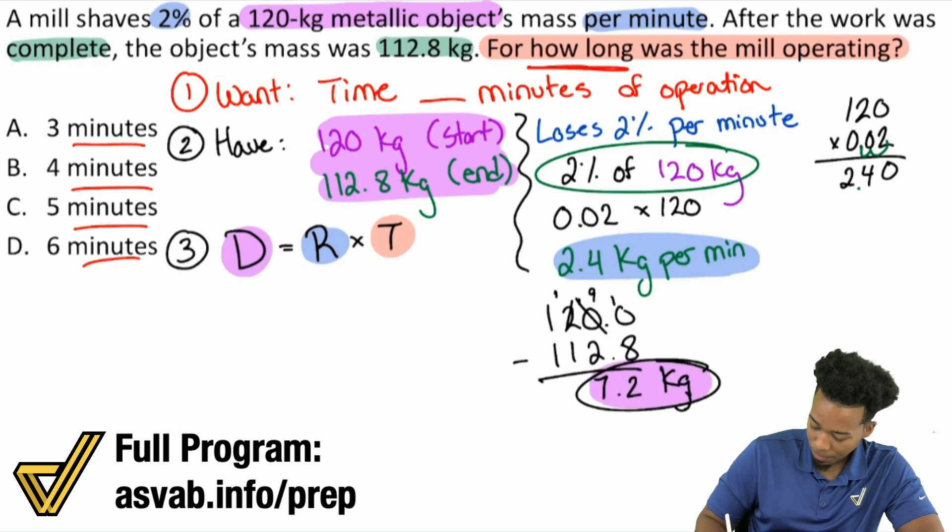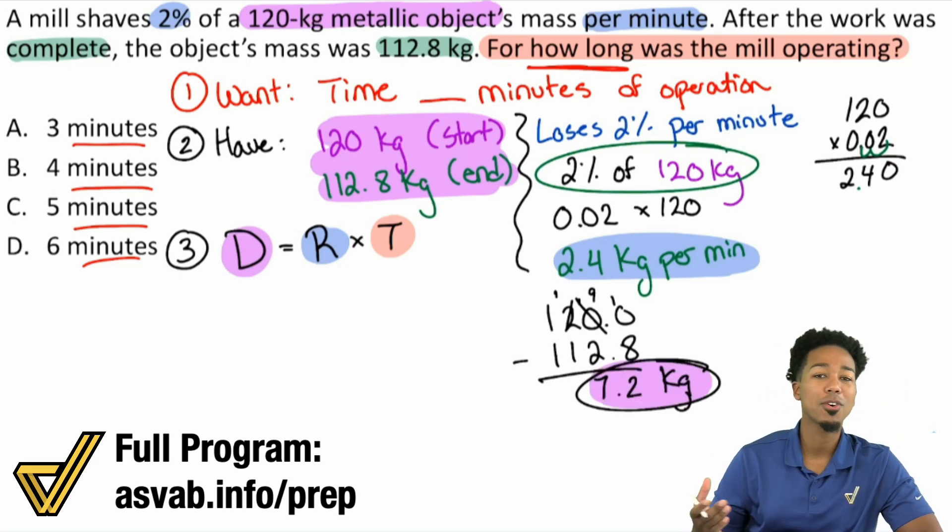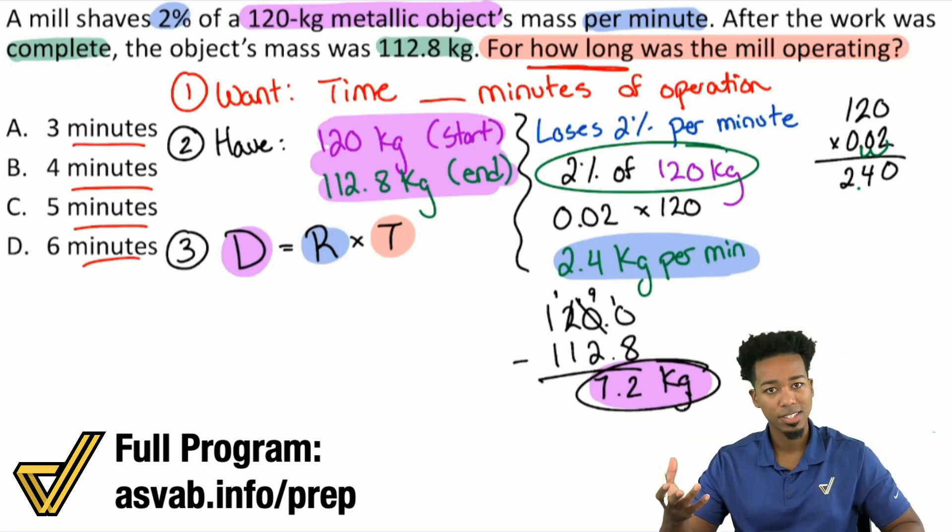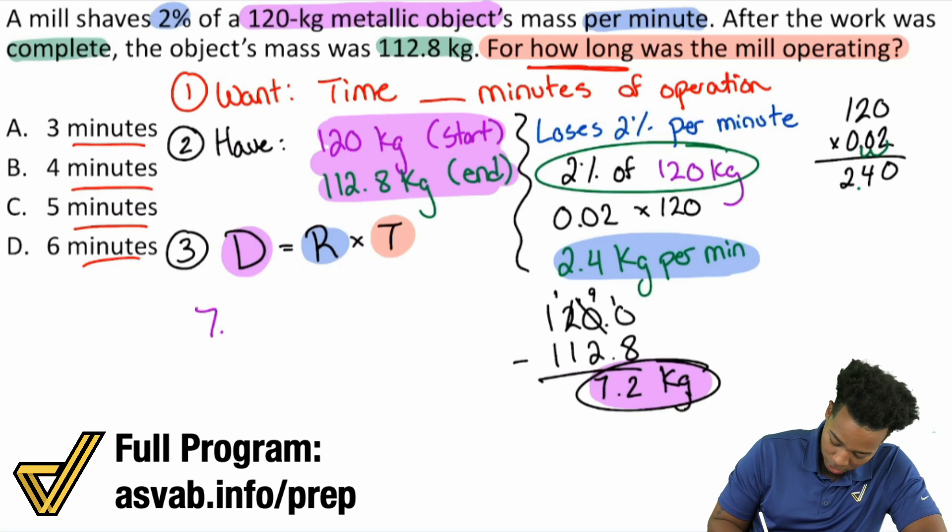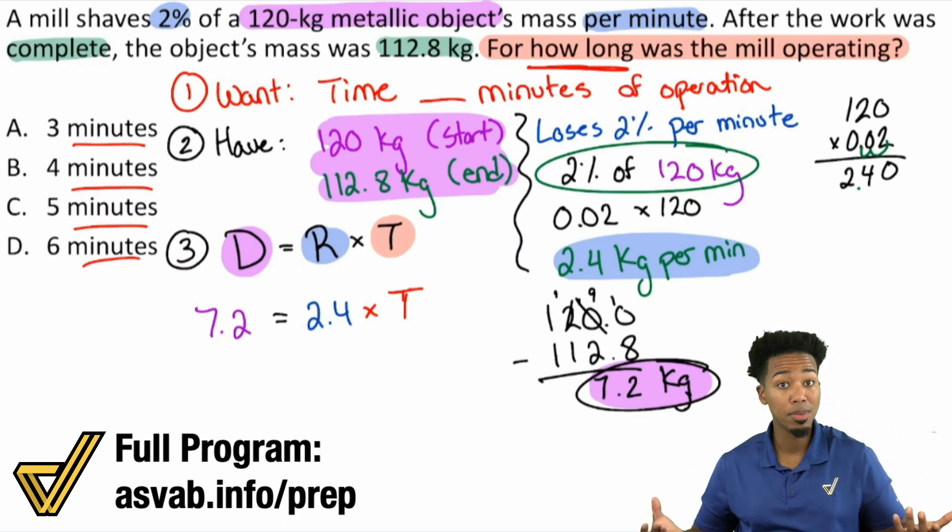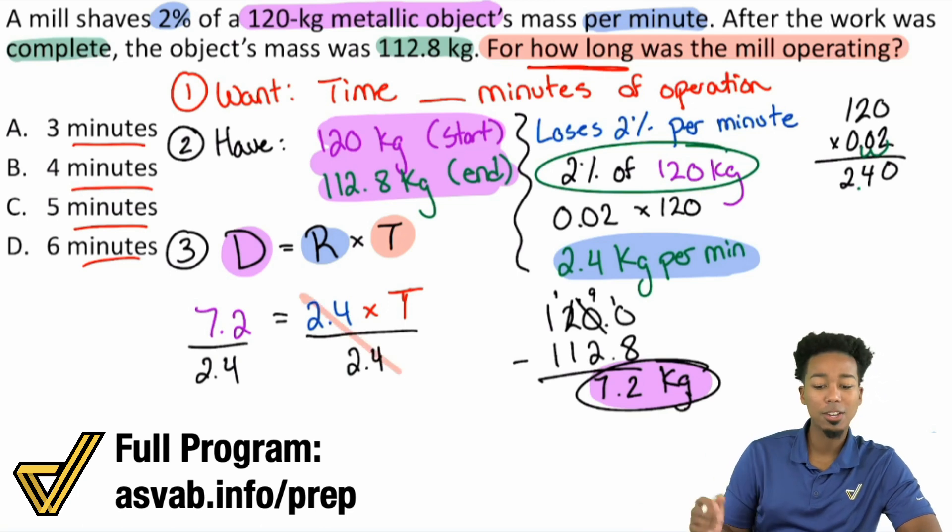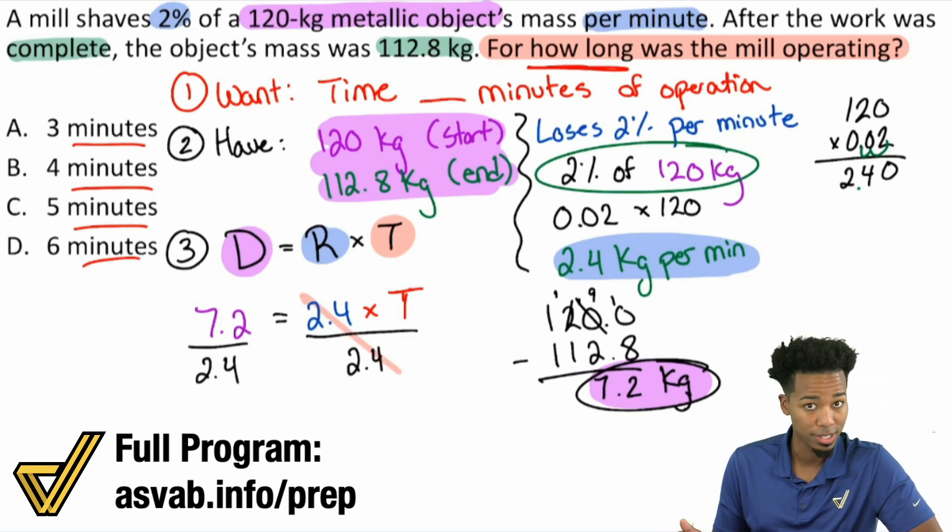We can go ahead and find that time because we've converted again, the percent per minute into kilograms per minute. The distance is kilograms and the time is in minutes. The units match up. We can plug in and we can solve now. So here we're going to have 7.2 kilograms lost at a rate of right over here, 2.4 kilograms per minute. And we're going to multiply that by a certain amount of time to figure out again, how long this mill is operating for. So the only thing you need to do now is divide both sides by 2.4 right over here, my math party people. Look at that. Booyah.